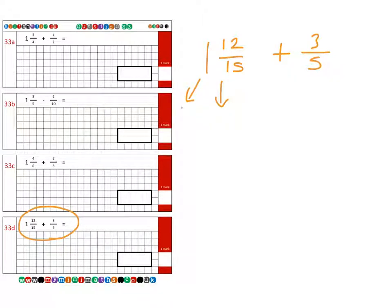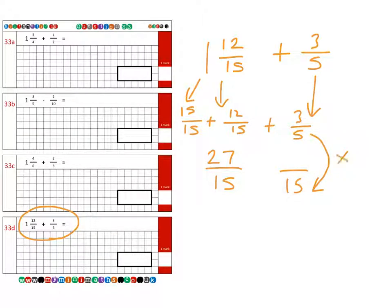1 whole is the same as saying 15 out of 15. And we're going to add that to 12 out of 15, which gives us 27 out of 15. And then we're going to add the 3 fifths. We know we need to change these fifths into 15, which fit very nicely. And we've multiplied that by 3. So we do the same with the top up here, which gives us 9.